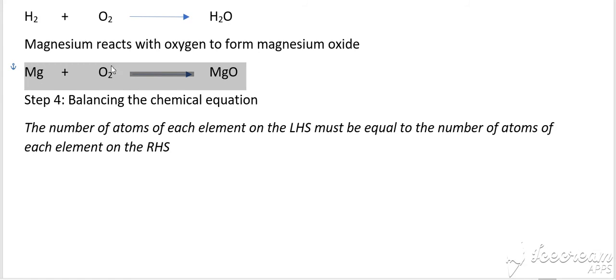But oxygen here has two atoms. But here oxygen has only one atom. So, these reactions, they are not balanced reactions. So, step 4 is about balancing these reactions. Means making the number of atoms of each element on the left hand side equal to the number of each element on the right hand side.